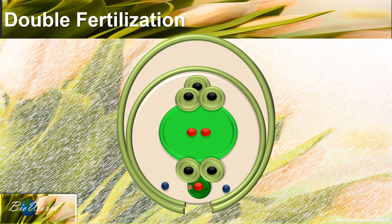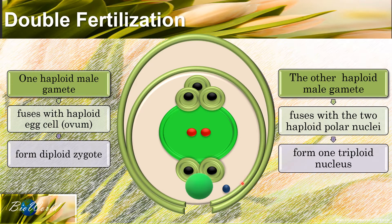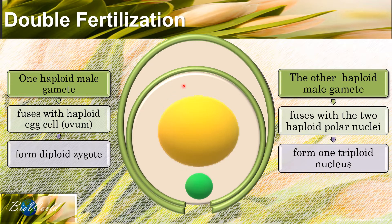Once inside the embryo sac, both male gametes will carry out fertilization — that's why it's called double fertilization, but they fertilize two different cells. One haploid male gamete will fuse with the ovum to produce a diploid zygote, while the second haploid male gamete will fuse with the two haploid polar nuclei to form one triploid nucleus. The synergid cells and the antipodal cells will degenerate, so at the end of double fertilization the embryo sac will only have a diploid zygote and a triploid nucleus.